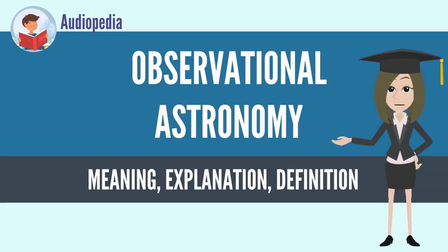Observational astronomy is a division of astronomy that is concerned with recording data about the observable universe, in contrast with theoretical astronomy, which is mainly concerned with calculating the measurable implications of physical models. It is the practice and study of observing celestial objects with the use of telescopes and other astronomical instruments.